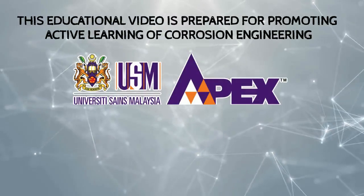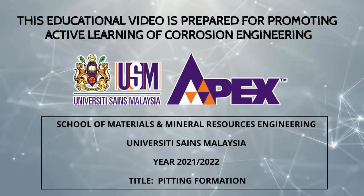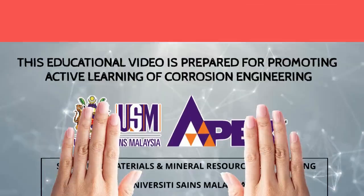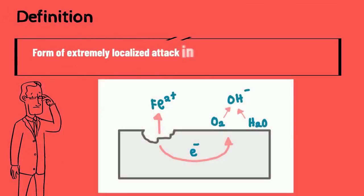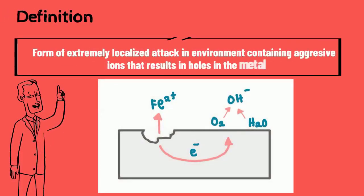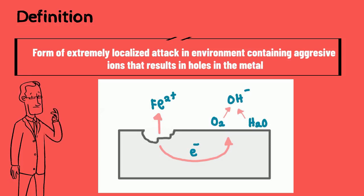Hello everyone, we are from group 9. Today we will present about pitting formation and mechanism. Pitting is a form of extremely localized attack in environments containing aggressive ions that results in holes in the metal.